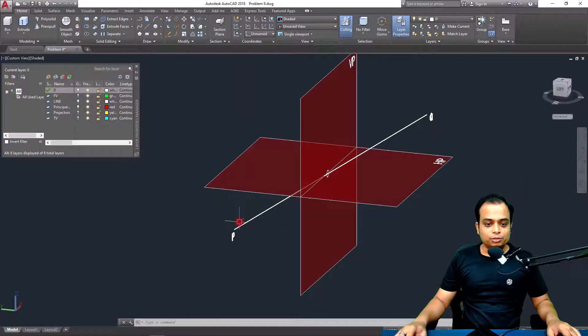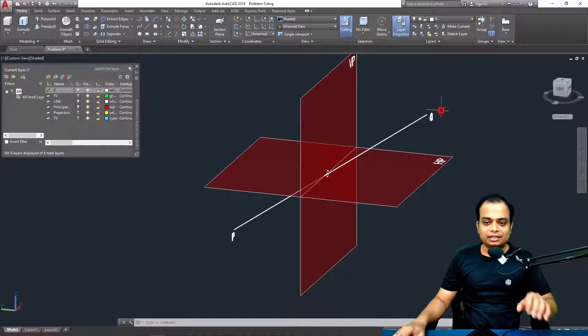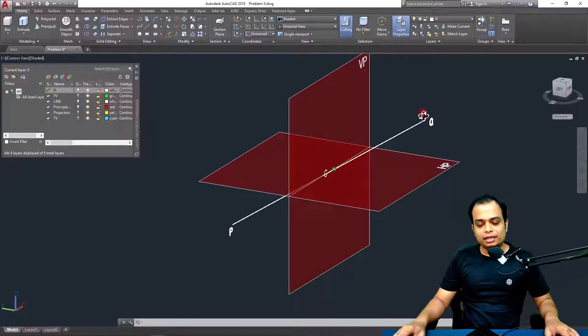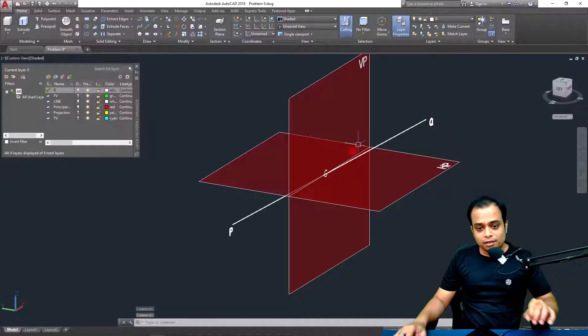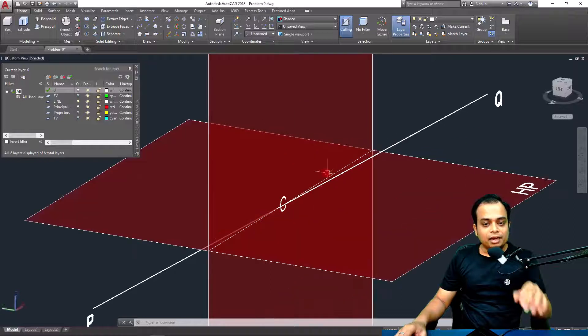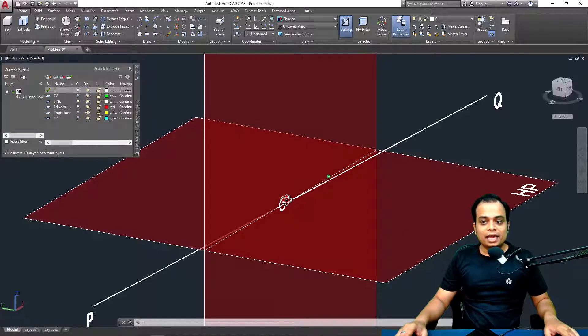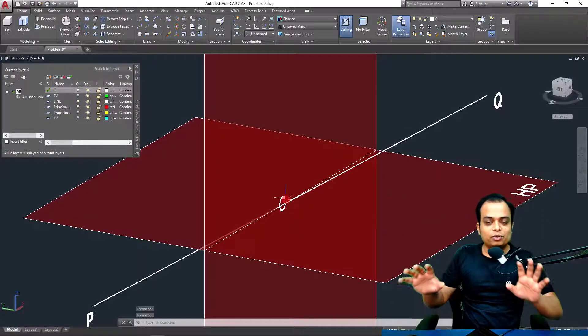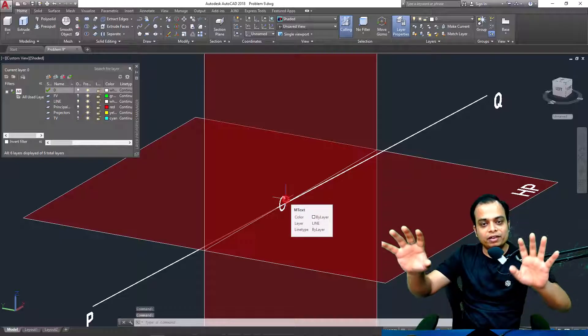You can clearly see below HP and behind VP, while the other end Q is above HP and in front of VP. But there is a point along the line which intersects this reference line and that point happens to be point C. Can you draw the projections? Can you create the final front view and final top view?